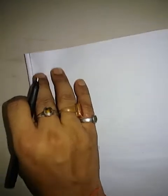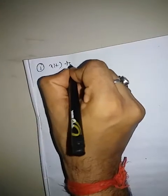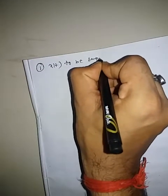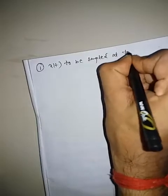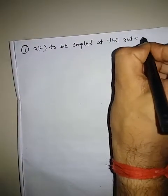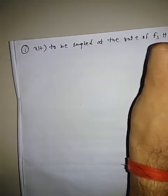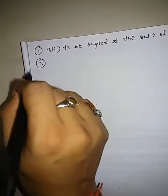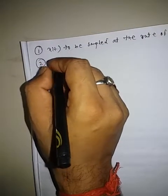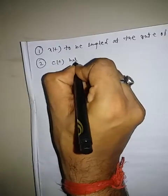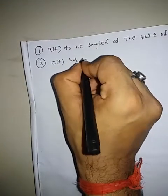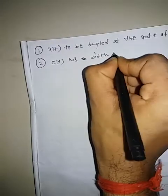Natural sampling depends on the chopping principle. Let us consider the analog continuous time signal XT to be sampled at the rate of Fs Hertz. The sampling function CT is a train of periodic pulses of width Tau.